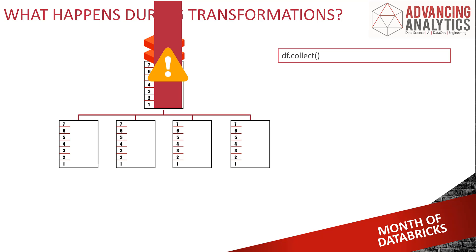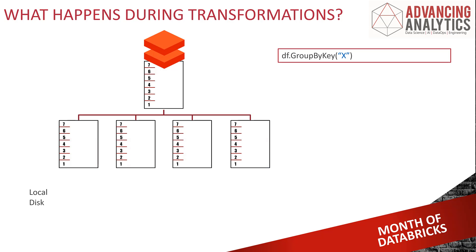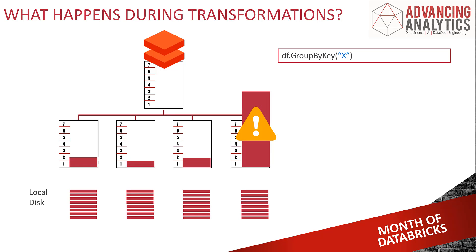Similar out-of-memory issues can happen on the workers. Running certain queries that force data to group together — like a group by key — will repartition your data, and each individual key becomes a single partition. A partition cannot be spread across more than one worker, so you need to be really careful not to pick something that massively skews your data and ends up with more data in a single partition than can fit on one worker. Consider the total memory reserved for data and what actions might cause skew or force data up onto the driver.